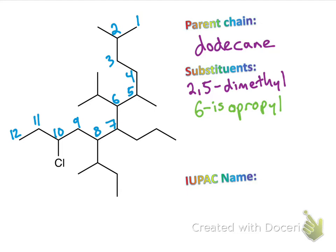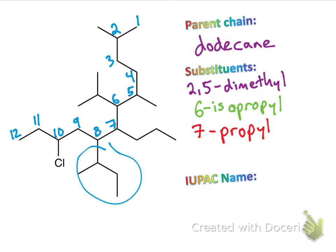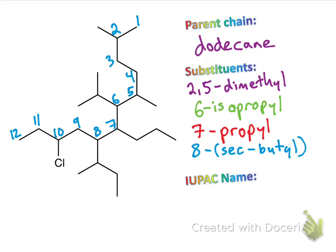Up next, we have this chain down here with three carbons on it, so that's going to be a 7-propyl — the prefix for three carbons is prop, and since it's a substituent coming off the main chain, we end it in -yl. Then we have this group right here: it's a sec-butyl group at position 8. You can use parentheses since sec technically modifies the butyl side chain. And finally, we have 10-chloro.